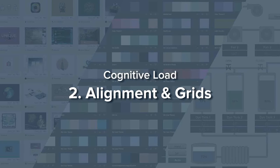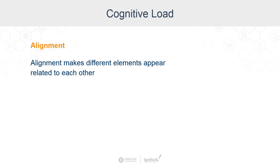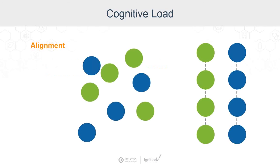Our next principle is a pair: alignment and grids. Alignment makes different elements appear related to each other. You can see here that we have some dots, and even though they're color-coded, the dots on the left aren't really seen as two groups. It isn't until they're brought into alignment that our brains perceive them as being related.